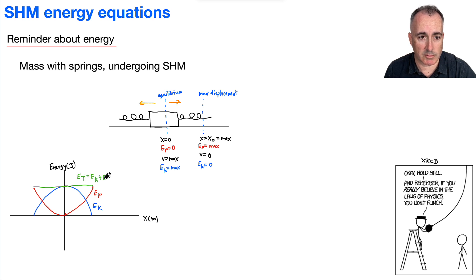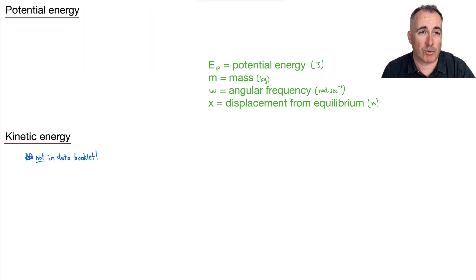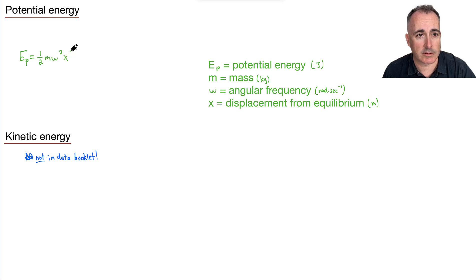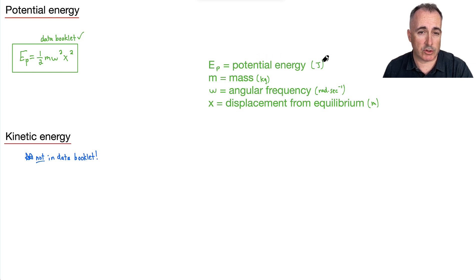Why am I reminding you of this when I already did it in another video? Because we're going to use this idea to help us figure out what happens with energy. So let's look at the potential energy of an object undergoing simple harmonic motion. Potential energy: EP equals one half m omega squared x squared. We've got the potential energy in joules, mass in kilograms, omega is the angular frequency, and x is the displacement from equilibrium.